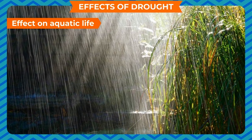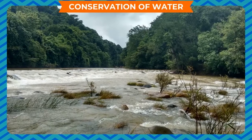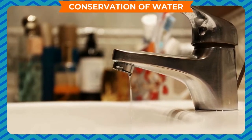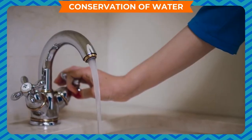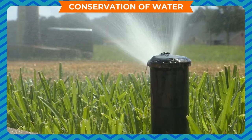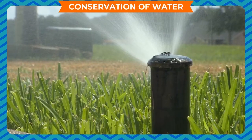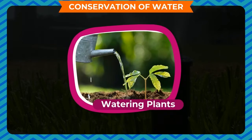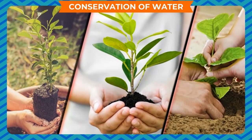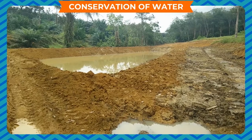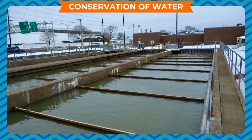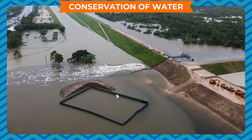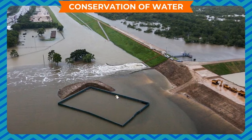Conservation of water means the effective use of water — not wasting water and maintaining its quality. Some ways water can be conserved include: stop wasting water and recycle it wherever possible; plant trees and other vegetation to increase absorption of water by the soil and raise the water table; reduce water pollution by treating sewage and factory waste before disposing; and control flooding by building dams to store water for use.